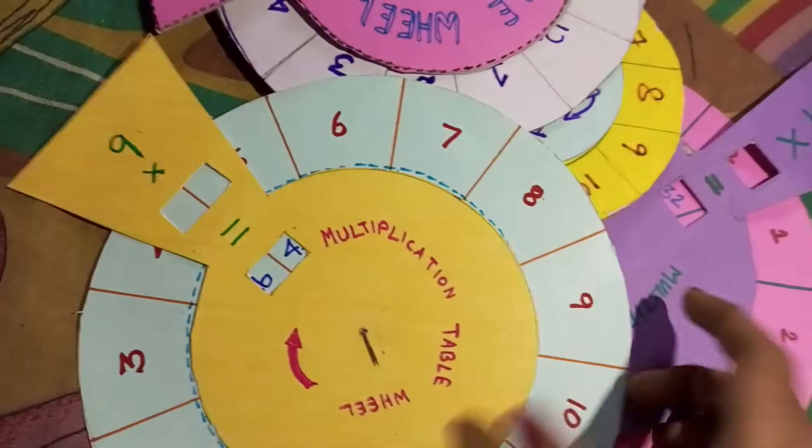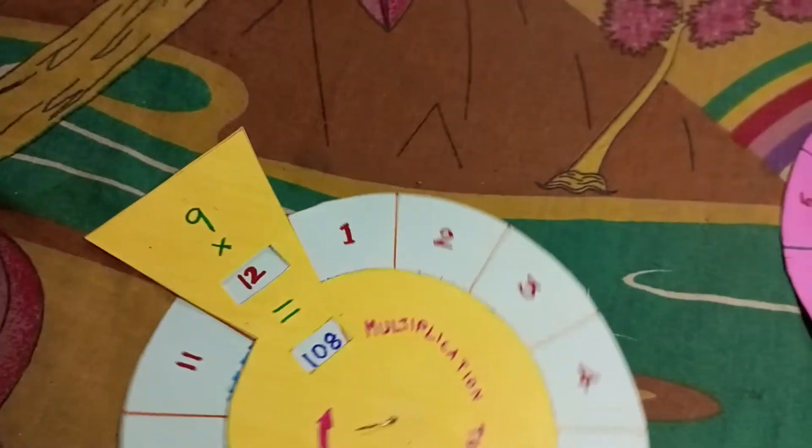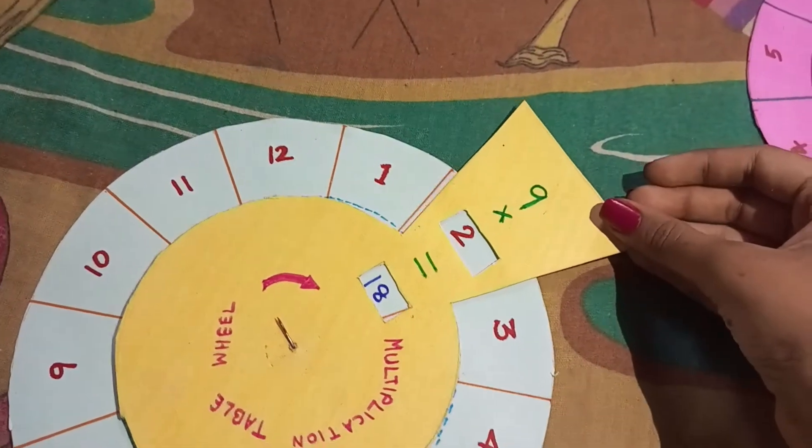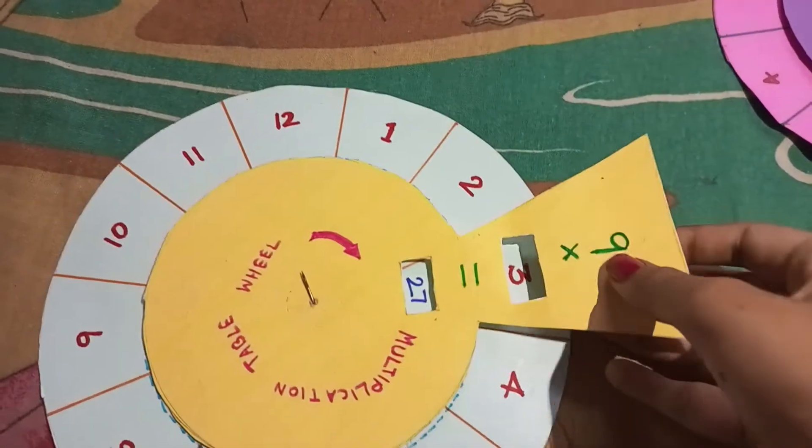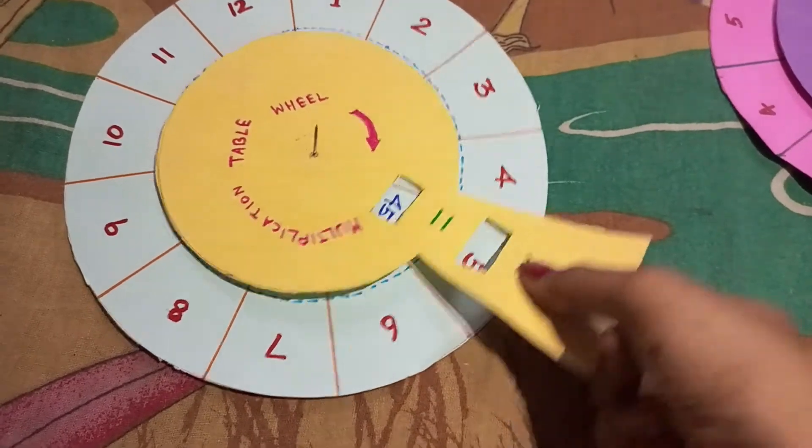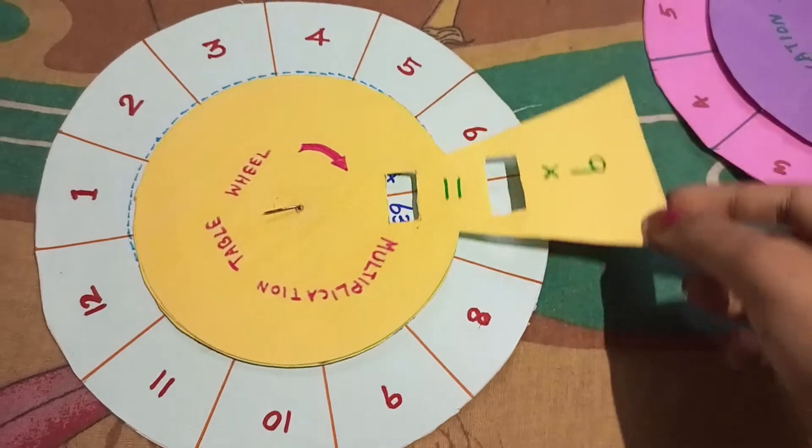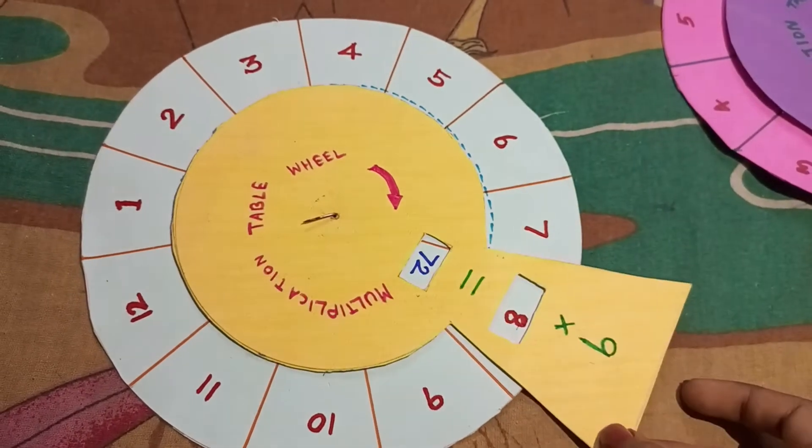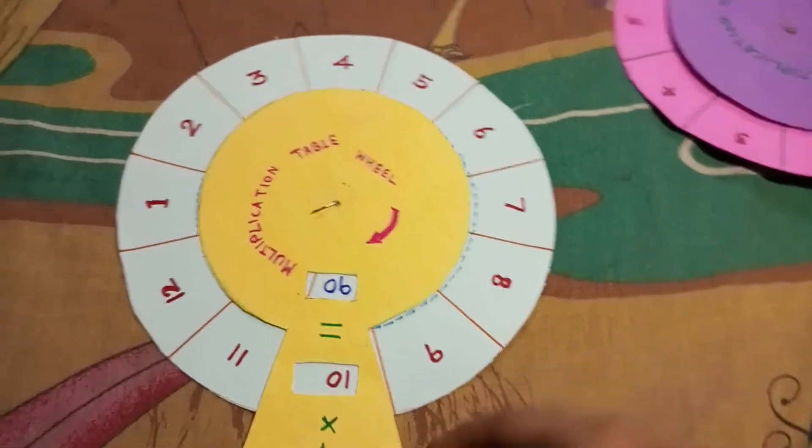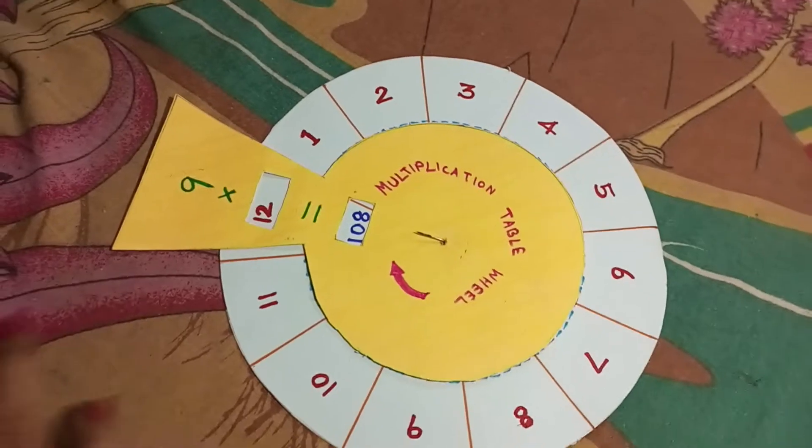Let's take a table. This is the 9 table. So first, 9 ones are 9, 9 twos are 18, 9 threes are 27, 9 fours are 36, 9 fives are 45. Wait, I will just keep it like this. 9 sixes are 54, 9 sevens are 63, 9 eights are 72, 9 nines are 81, 9 tens are 90, 9 elevens are 99, 9 twelves are 108.